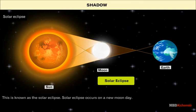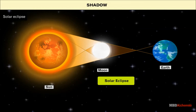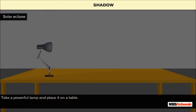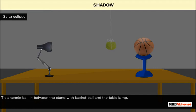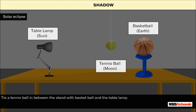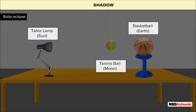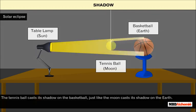Solar eclipse occurs on a new moon day. Let us perform an activity to show how a solar eclipse occurs. Take a powerful lamp and place it on a table. Take a basketball and place it on a stand as shown on the screen. Tie a tennis ball in between the stand with the basketball and the table lamp. The table lamp represents the sun, the basketball represents the earth, and the tennis ball represents the moon. Light the lamp. You will observe that the tennis ball casts its shadow on the basketball, just like the moon casts its shadow on the earth.